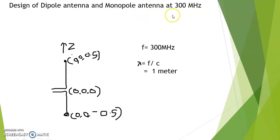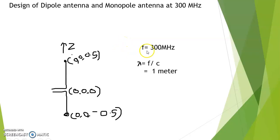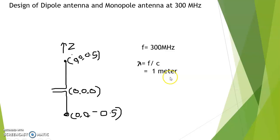We want to design at a frequency of 300 MHz. We have to calculate the length parameter of this antenna. Since we have taken frequency as 300 MHz, we will calculate the wavelength, which comes out to approximately one meter.